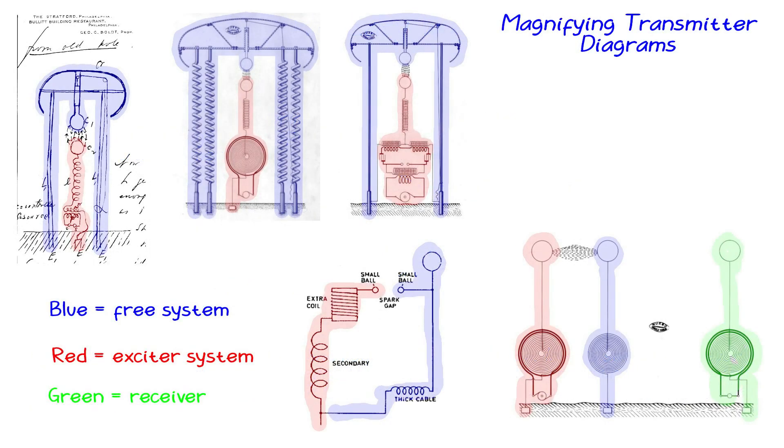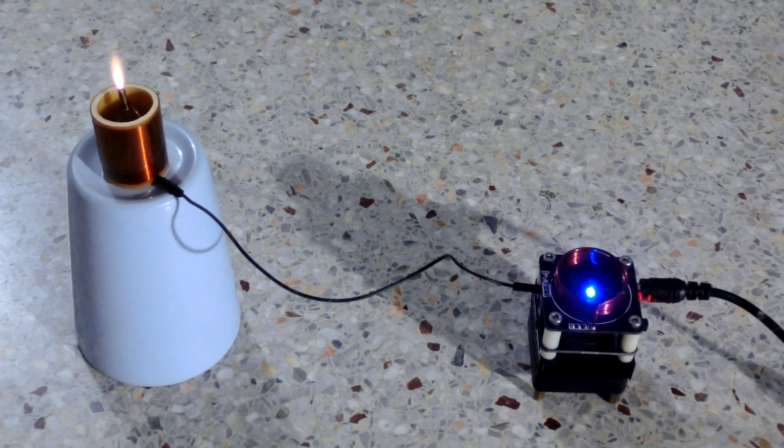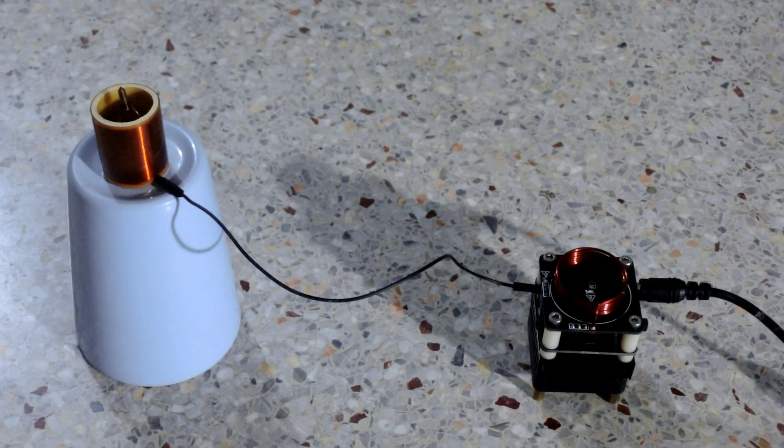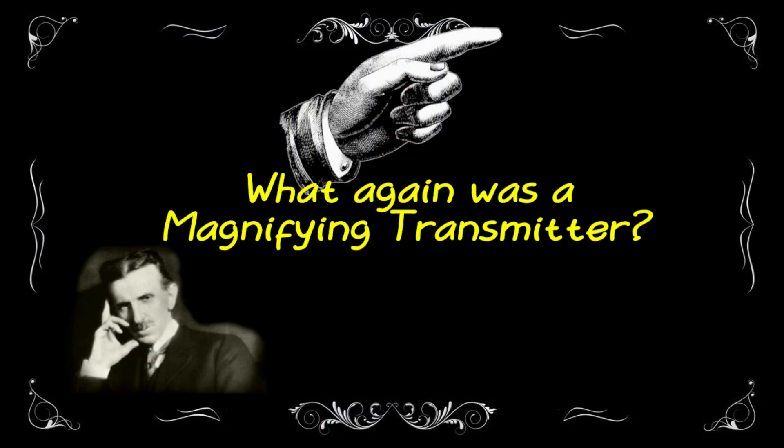Let me say it again, a freely resonating extra coil is not a magnifying transmitter. Otherwise, this would be a magnifying transmitter too. A magnifying transmitter can even be built without the use of an extra coil. The extra coil only makes the design more compact. For a brief introduction, see this video.